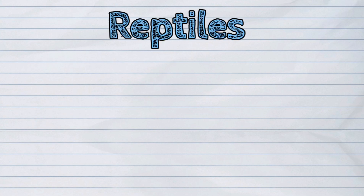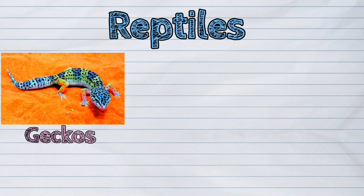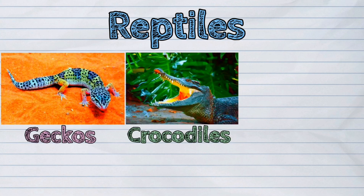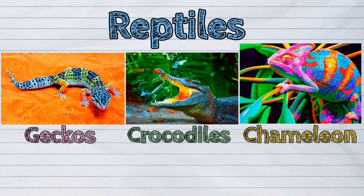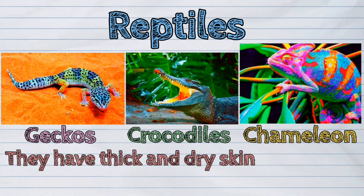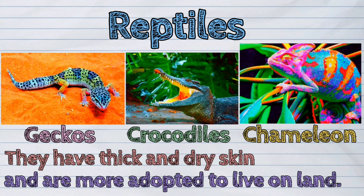The next example of vertebrates are the reptiles. Examples are the geckos, crocodiles, and chameleons. They have thick and dry skin and are more adapted to live on land.